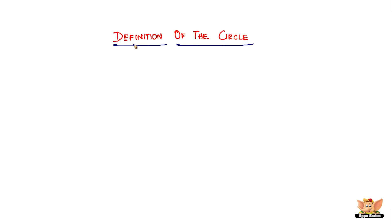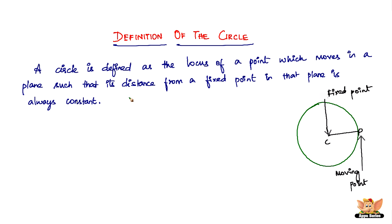In this video, let us look into the definition of the circle. A circle is defined as the locus of a point — if you do not know what the word locus means, you can think of it as a path. So a circle is defined as the path of a point which moves in a plane such that its distance from a fixed point in that plane is always a constant.